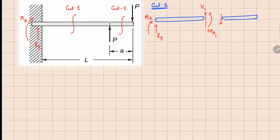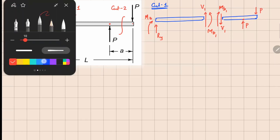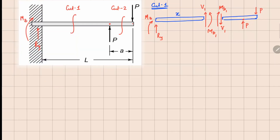The right phase will have V1 acting downwards and M_b1 going the other way. On this part we have a force P acting here and a force P acting right here. In terms of distances, cuts are always made at a distance of x, so this is x. The overall length is L, so the remaining distance becomes L minus x, and this last portion has to be L minus x minus a.